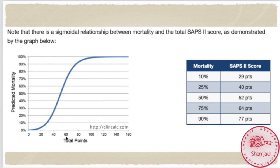Here we can see the sigmoidal relationship between mortality and SAPS 2 scoring. When the score reaches between 60 to 80, the predicted mortality chance approaches near 100%. ICU scoring systems provide a valuable framework to characterize the patient's severity of illness, for evaluation of ICU performance, quality improvement studies, and benchmarking or comparison studies. Hope you enjoyed this topic — see you soon with the next topics, bye bye.